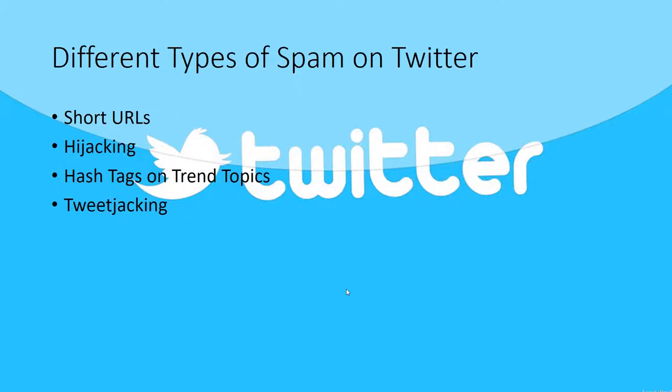Now what are the different types of spam we can see on Twitter? The short URL is one of the most common spam types we can notice. Because of Twitter's 140-character constraint, everyone has to shorten their links using short URLs, and therefore one cannot identify which website they are going to. Spammers use this to trick people into clicking their links and visiting sites that may have malicious content.